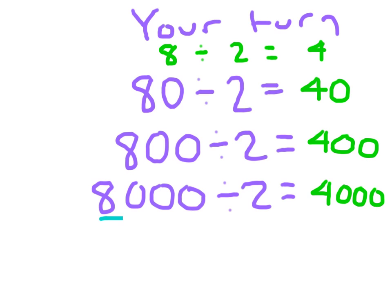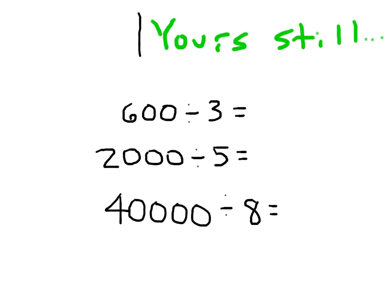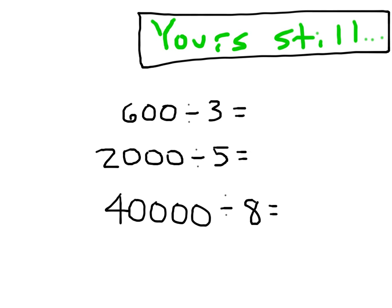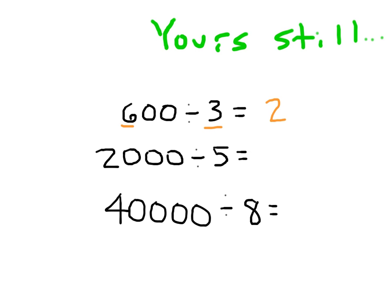For instance, 80,000 divided by 2 — the basic fact is still 8 divided by 2, and since we're talking thousands we place three zeros, giving us 40,000. Now here's your next set of problems — copy them down, hit pause, and solve them. Be very careful about how many zeros you place in your answer. The basic fact for 600 divided by 3 is 6 divided by 3, which is 2 — since we're talking about 600s, the answer is 200. For 2,000 divided by 5, the basic fact is 20 divided by 5, which is 4 — that's 20 hundreds, so we place two zeros: the answer is 400. For 40,000 divided by 8, the basic fact is 40 divided by 8, which is 5 — since we're talking 40,000s, the answer is 5,000.